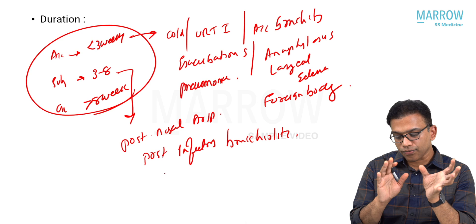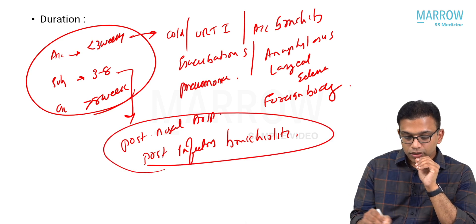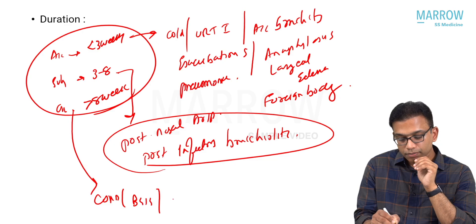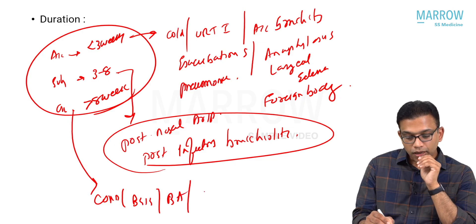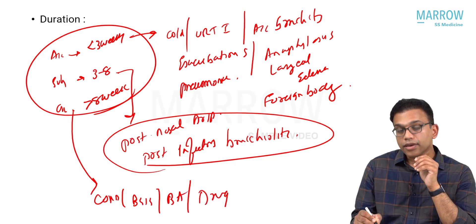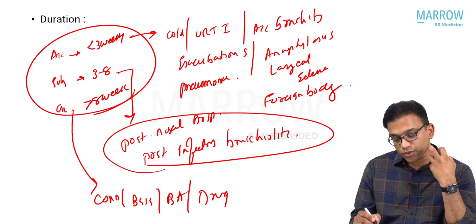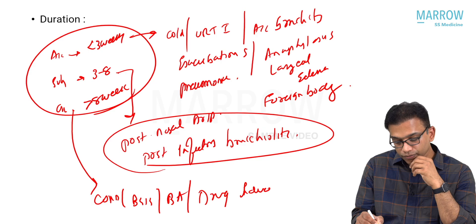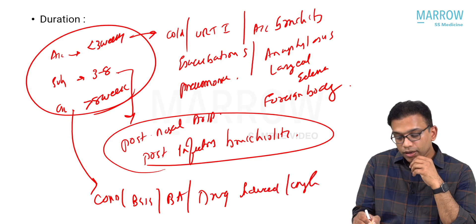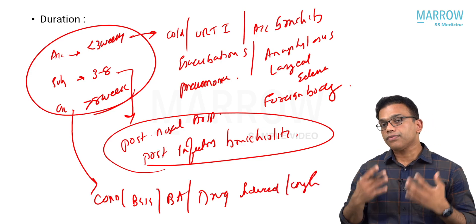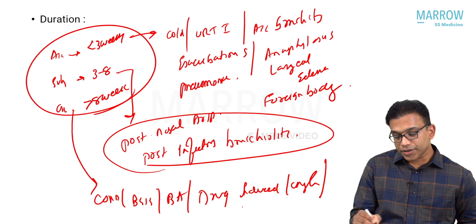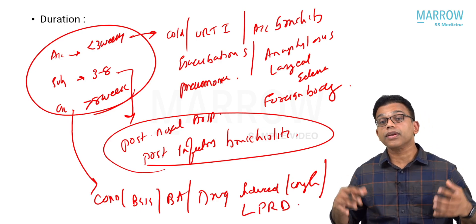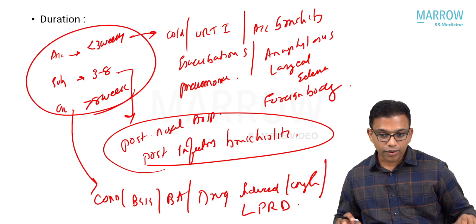Chronic cough (more than 8 weeks) can be secondary to COPD, chronic bronchitis, bronchial asthma, drug-induced causes — ACE inhibitors being a classic example of drugs causing persistent dry cough — and laryngopharyngeal reflux disease causing reflux-induced cough.